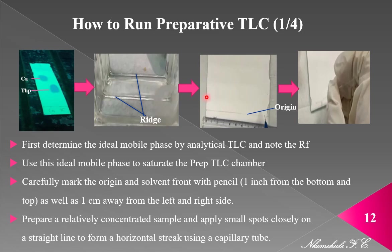Using a pencil, you mark 1 cm from the bottom for small plates, or 1 inch from the bottom — that is your origin. From the top, you also mark 1 inch as the solvent front. Then you leave 1 cm from the left and 1 cm on the right, because spotting to the end of the plate can cause the solvent front to migrate unevenly, which you do not want.